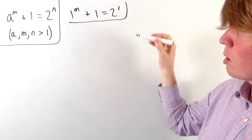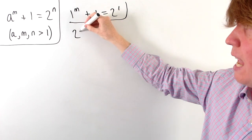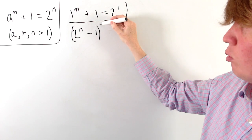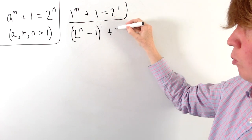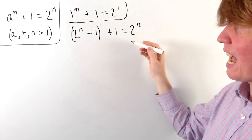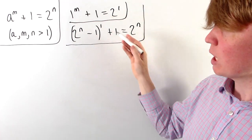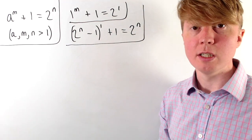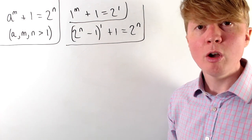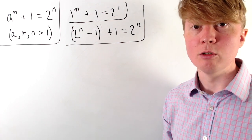Similarly, if we were to allow m to be equal to 1, then we could choose a as 2 to the n minus 1, raise this to the power of 1 and add 1 — this will always equal 2 to the n for whichever value of n you choose. So we get infinitely many solutions in each of these cases, but now we'll focus on the scenario where all integers have to be strictly greater than 1.